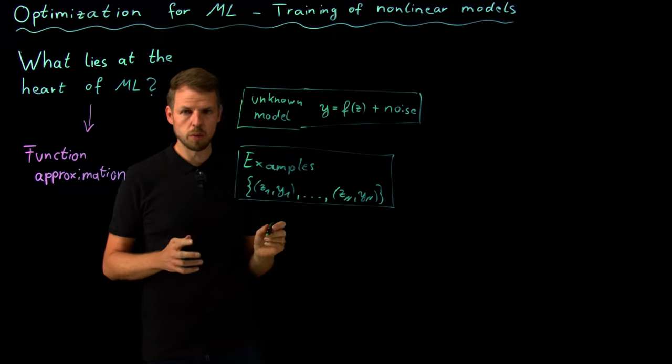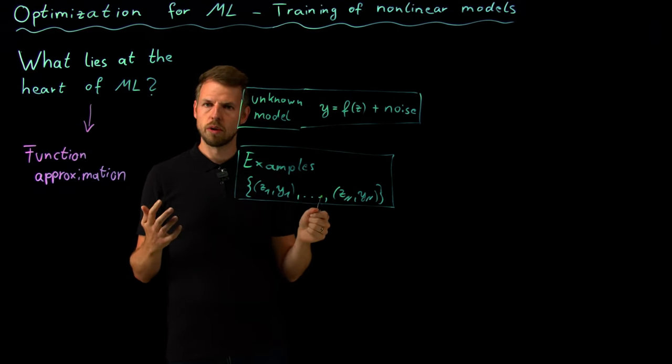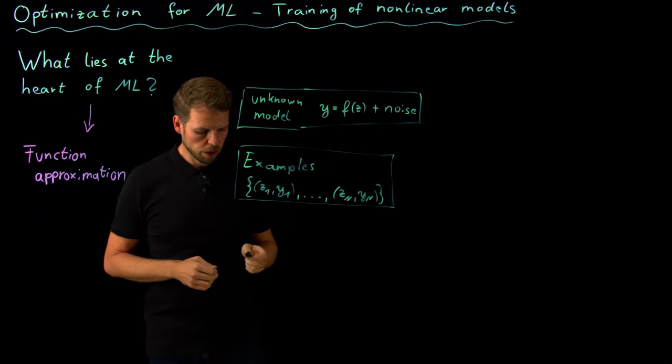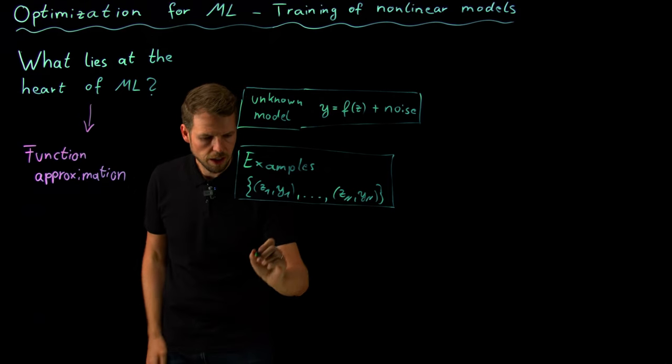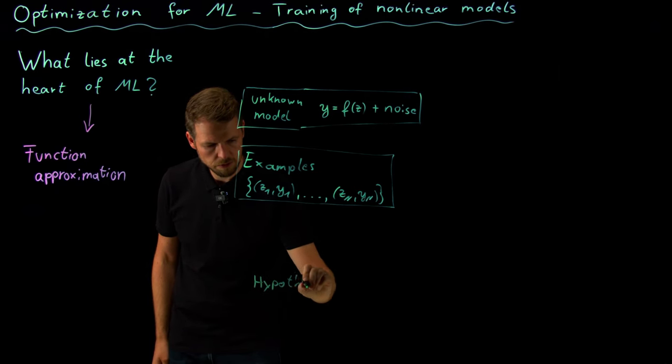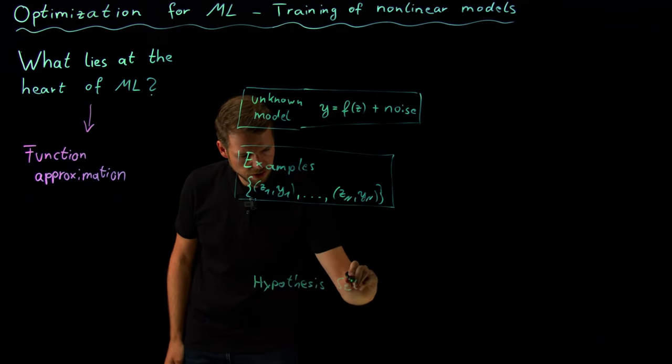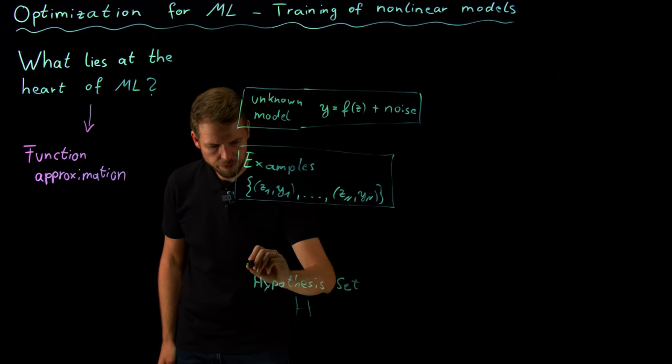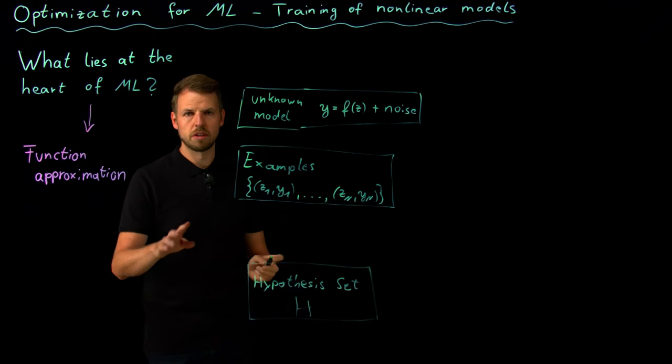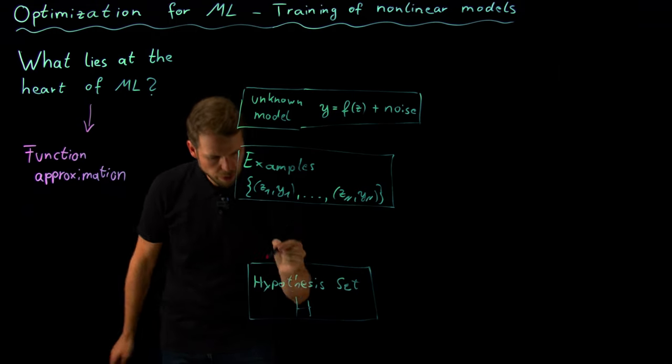What we start with is with a decision: which kind of model are we actually going to train? We know already a little bit of linear models, but this is about nonlinear models. So what we start with usually is a hypothesis space. This is the set I'm going to denote by capital H. This is my set of hypotheses that I'm allowing.